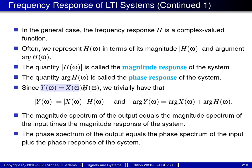Since big Y equals big X times big H, taking the magnitude of both sides gives us that the magnitude spectrum of the output equals the magnitude spectrum of the input times the magnitude response of the system. Similarly, taking the argument of both sides gives us that the phase spectrum of the output equals the phase spectrum of the input plus the phase response of the system.